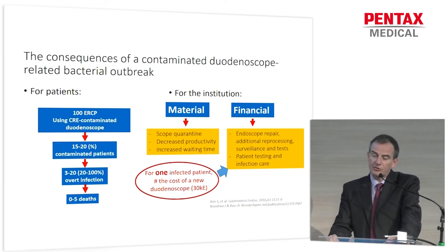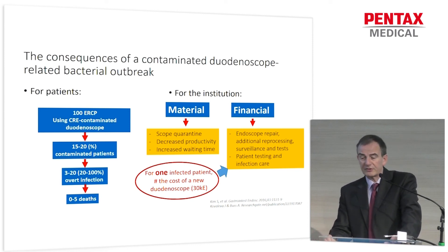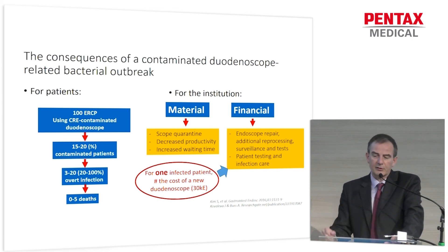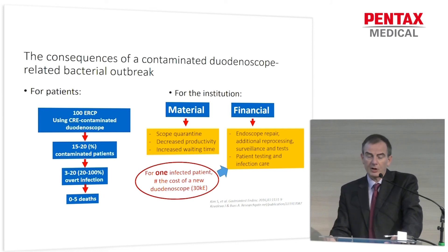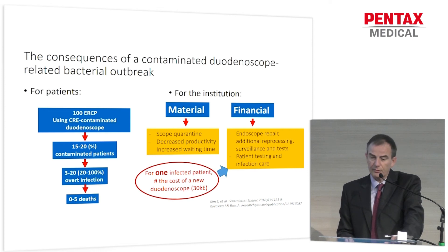Financial consequences include the need for endoscope repairs, additional reprocessing, surveillance and tests, and patient testing and infection care. I roughly calculated from different reports that for one infected patient, the cost for the institution will be nearly the cost of a new duodenoscope — approximately 30,000 euros.